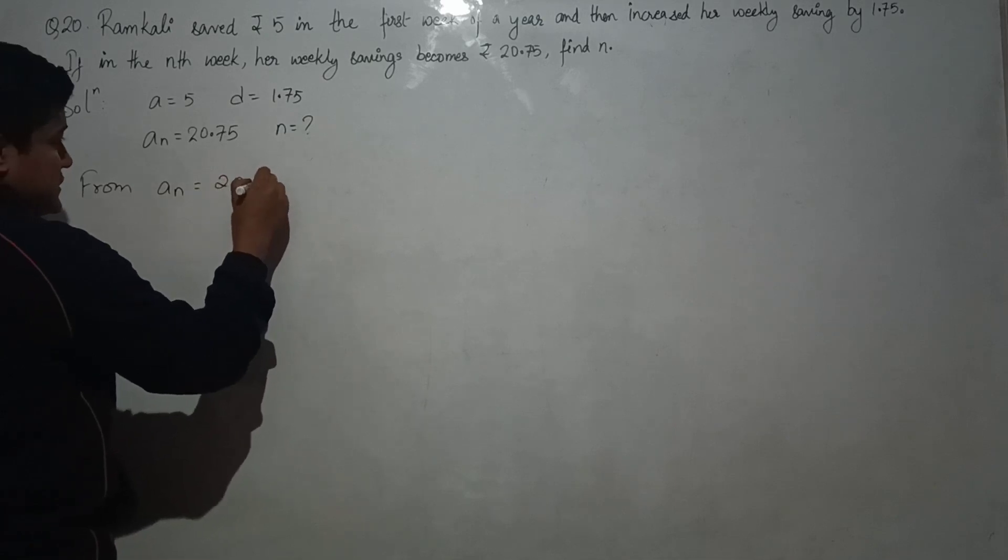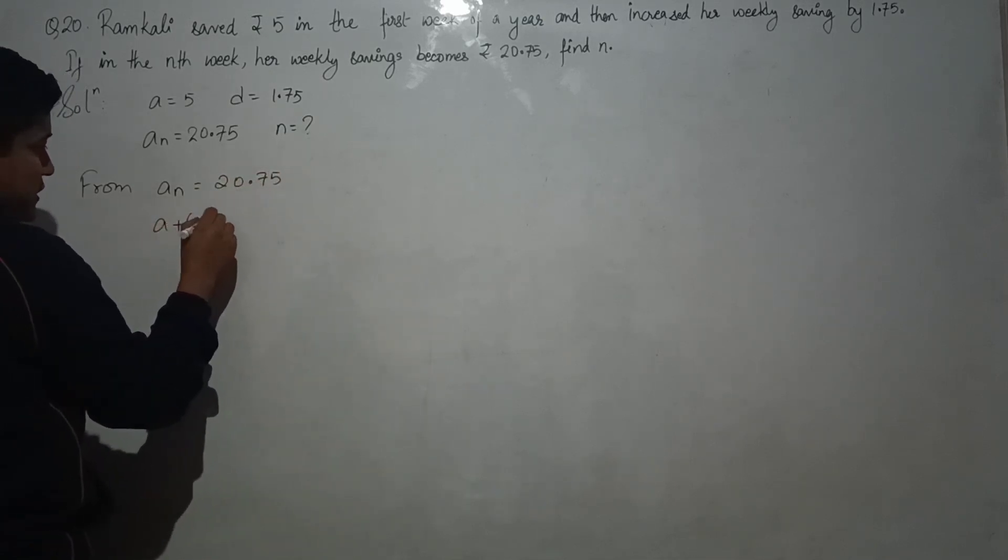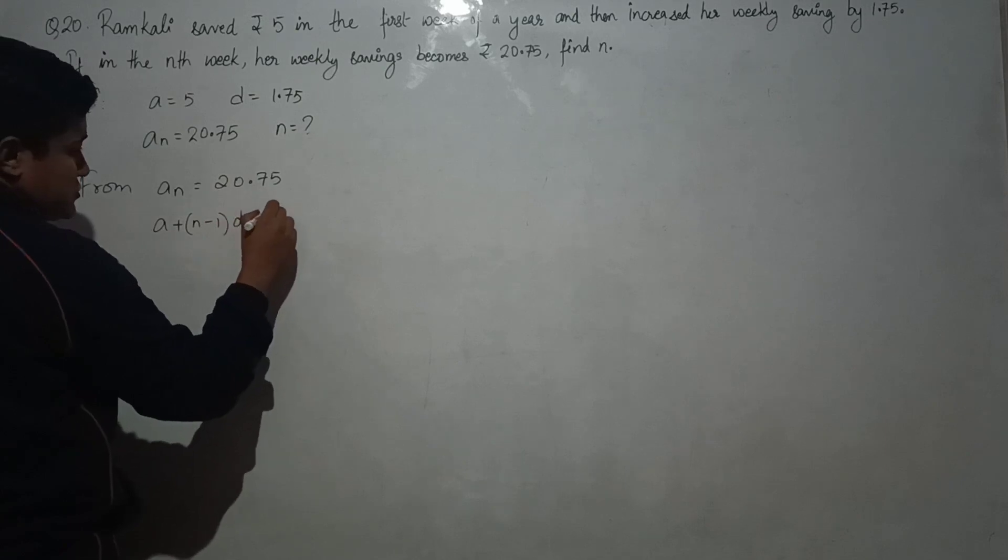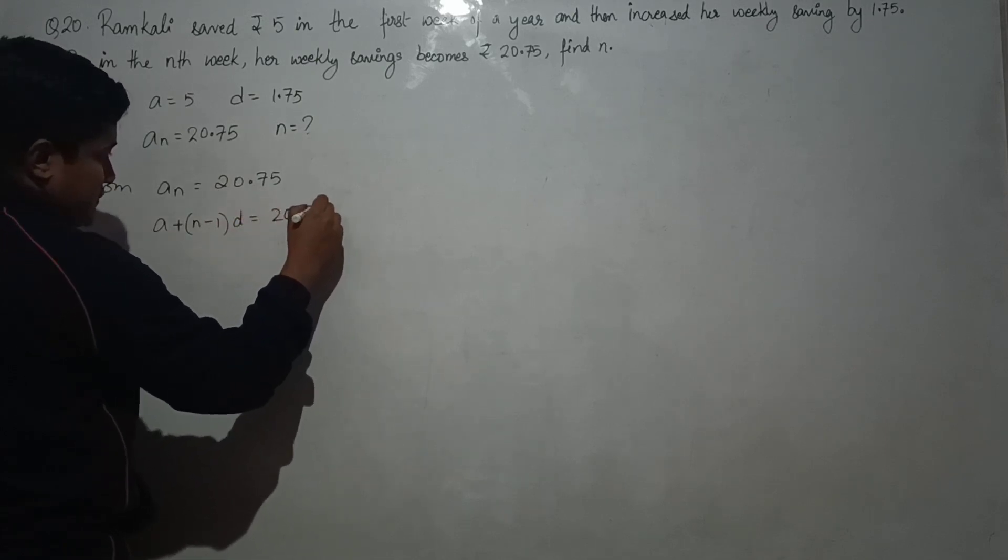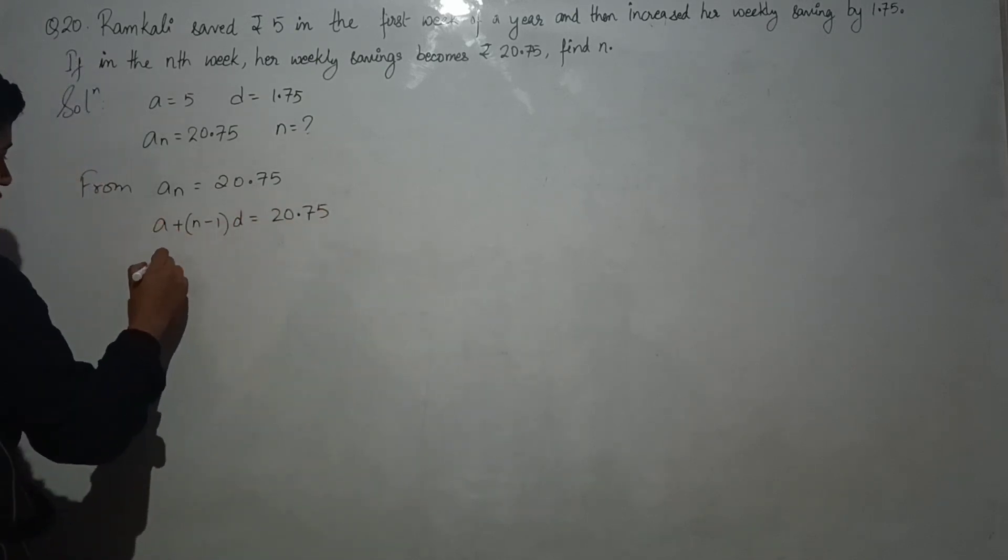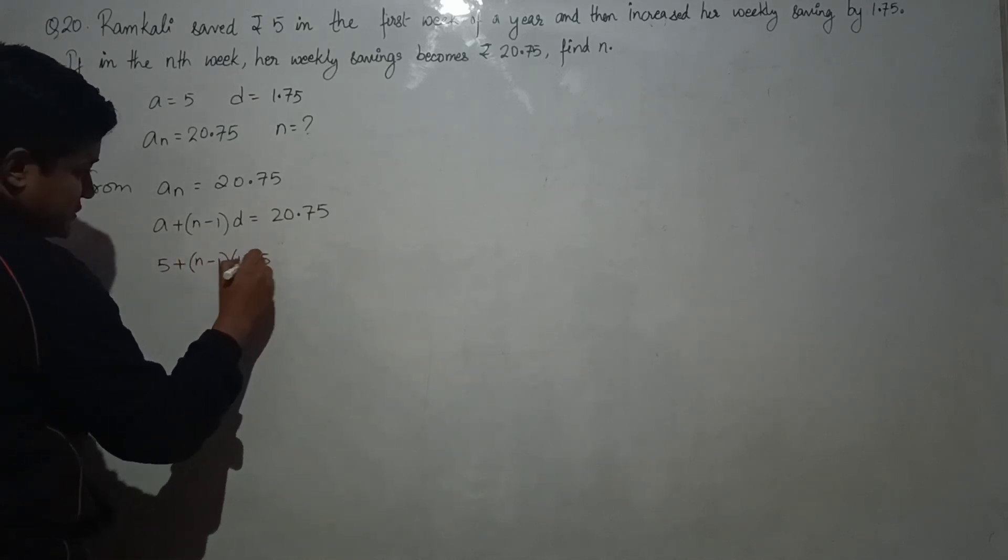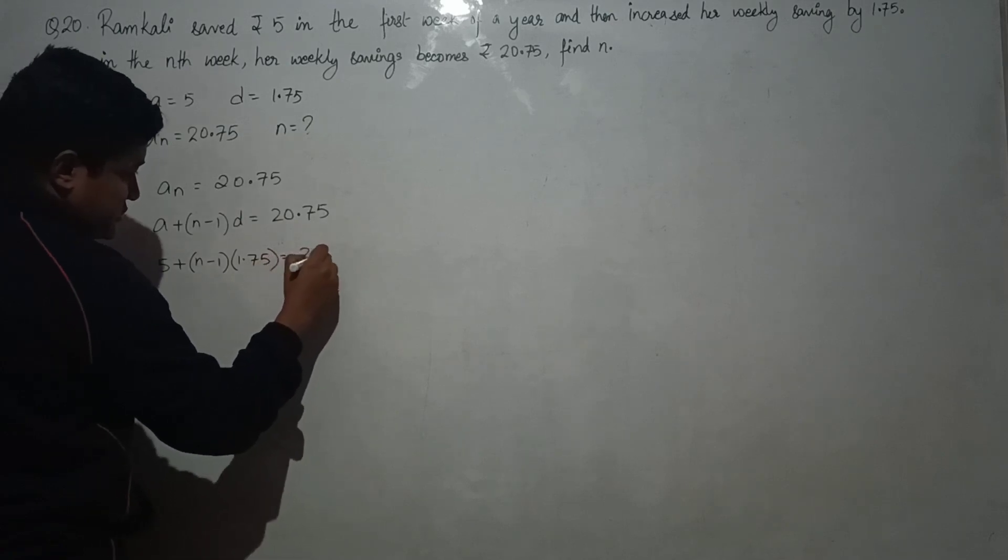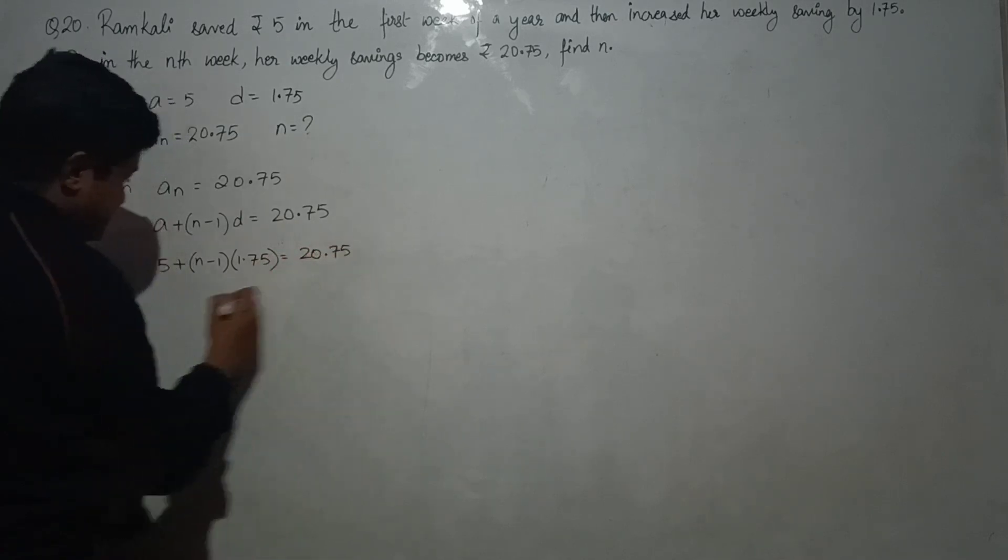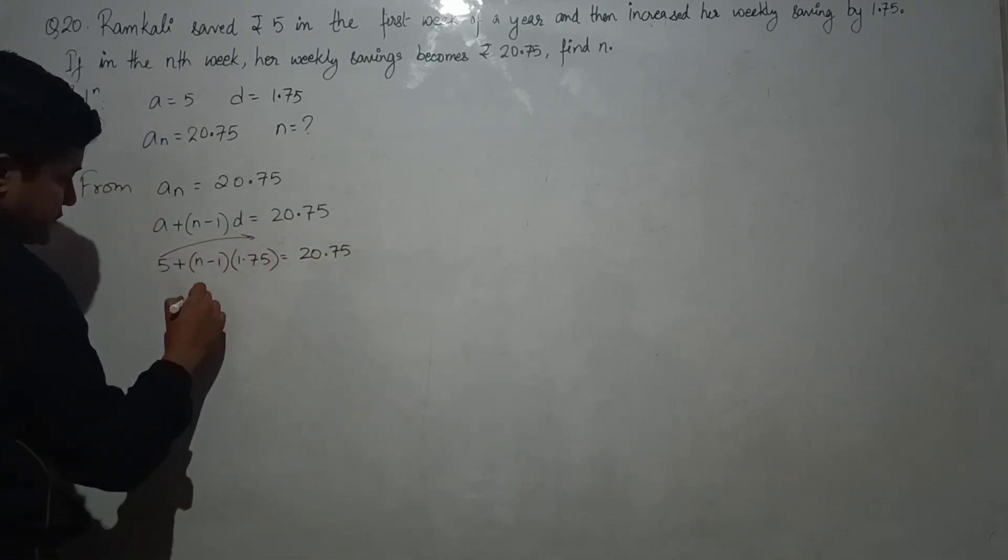a_n equals to 20.75, or a plus (n minus 1)d equals to 20.75. So a is your first term, 5, plus (n minus 1) times 1.75.